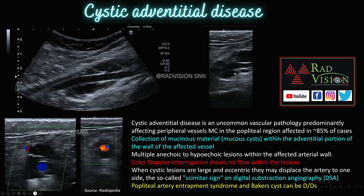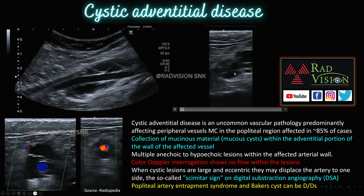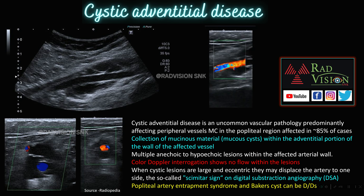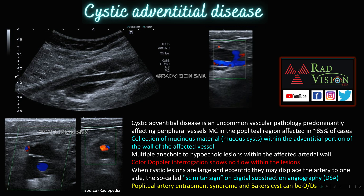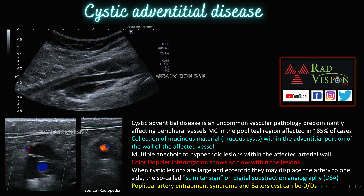Next case: here you can see this is the popliteal region, this is the popliteal artery, and there are multiple cystic spaces surrounding the popliteal artery. Here you can see the artery with multiple cystic areas adjacent to it. On color Doppler, you can see the popliteal artery flow pattern, but the multiple cystic spaces adjacent to the artery are not taking up color. These are nothing but multiple mucous cysts in the adventitial wall of the affected vessel. This is common in the popliteal region — definitely suspect cystic adventitial disease.